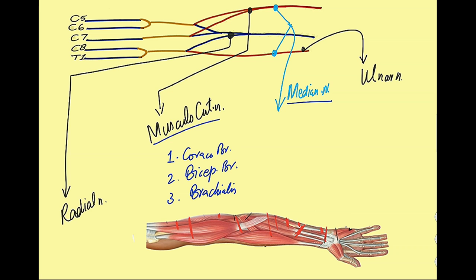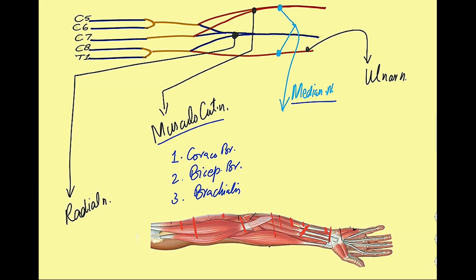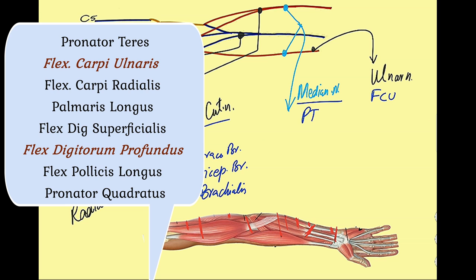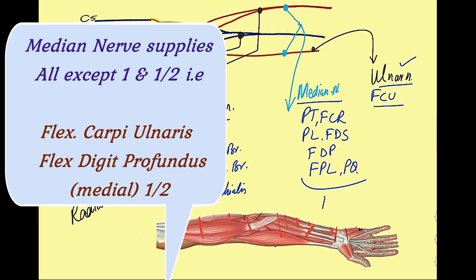The median nerve is the main nerve for the muscles of the front of the forearm. The forearm front muscles have a superficial and a deep group, including: pronator teres, flexor carpi ulnaris, flexor carpi radialis, palmaris longus, flexor digitorum superficialis, flexor digitorum profundus, flexor pollicis longus, and pronator quadratus. All these muscles are supplied by the median nerve except one and a half — meaning one complete muscle and half a muscle are supplied by the ulnar nerve.